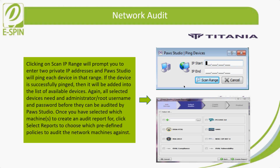Clicking 'Scan IP Range' will prompt you to provide an IP address range and Post Studio will ping each device in the range. If a device is successfully pinged, it will be added to the list of available devices. All selected devices require an administrator or root username and password before they can be audited by Post Studio.